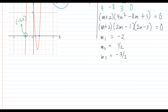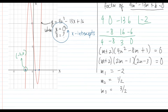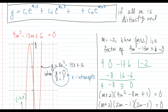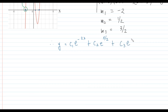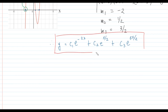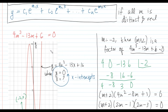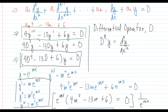Since all three values of m are distinct and real, we apply the general solution formula. Therefore, the solution is y equals c₁·e^(−2x) plus c₂·e^(x/2) plus c₃·e^(3x/2). That is the final answer — the general solution of our differential equation 4y''' minus 13y' plus 6y equals 0.